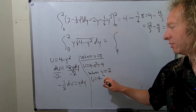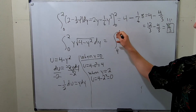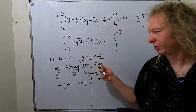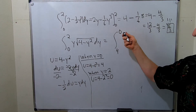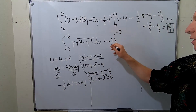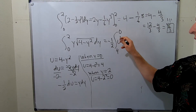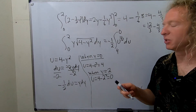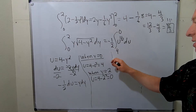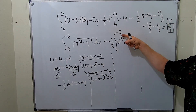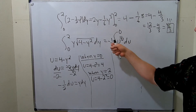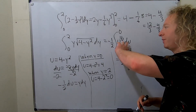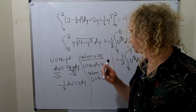So we go from u equals 4 to u equals 0, and the y dy becomes negative one-half, leaving the square root of u, written as u to the one-half, du. To handle the negative one-half, we can switch the limits of integration — that forces a negative sign, which cancels the negative one-half and gives us positive one-half. So we integrate one-half times u to the one-half from 0 to 4.